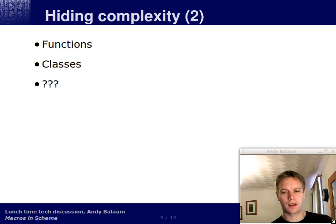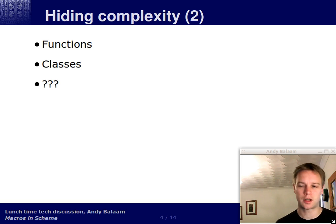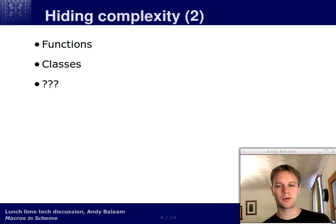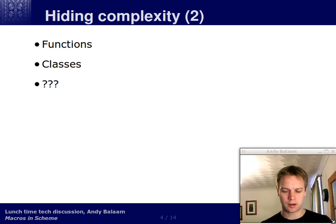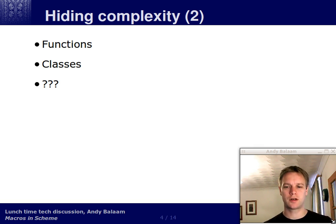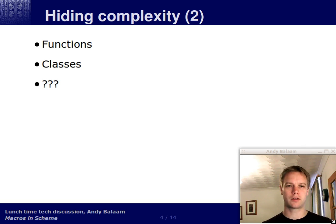In programming languages there are several ways of hiding complexity — this is what we do all the time. We express a concept and then use it. The ways we do that is we write functions which have names, we write classes which have names. But are these always enough? Most languages have functions, some have classes. Do we ever find ourselves needing more? Sometimes I find myself writing Java and then writing some XML which is exactly the same. Sometimes I find myself writing loads of classes which all have a very similar structure but not in a way you can express using inheritance.